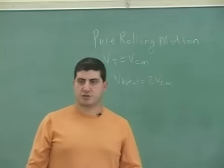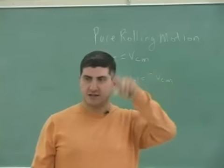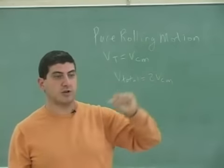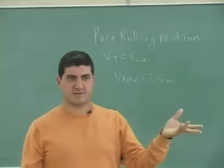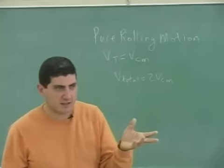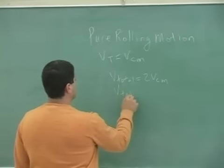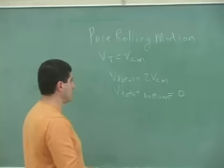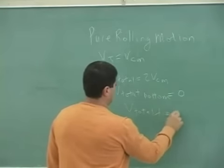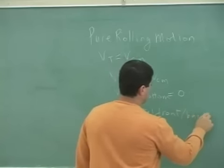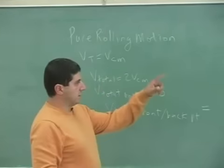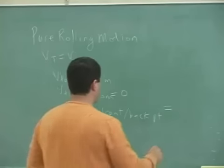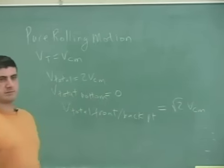For example, if you're driving your car at 60 miles per hour and there's a little bug at the tip of the tire, the bug will experience a velocity of 120 miles per hour at the top. And at the bottom it's zero velocity — the bug gets to rest for a split second. So V_total at the contact point is zero, and V_total at the front or back point is the square root of two times V_center_of_mass, because V_center_of_mass and V_tangential are the same.